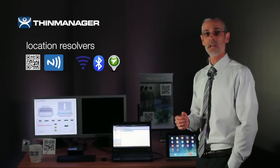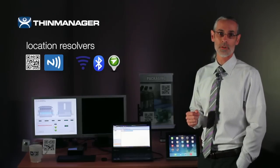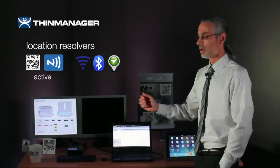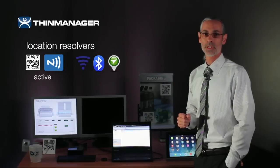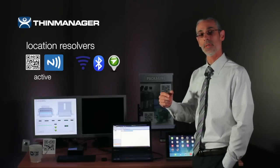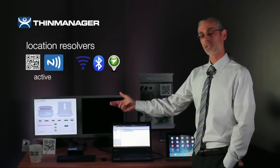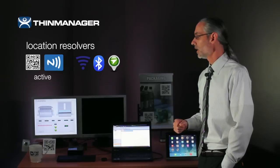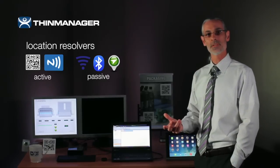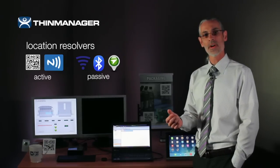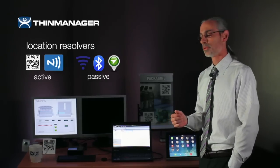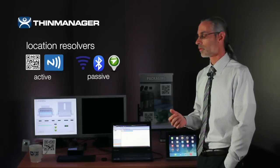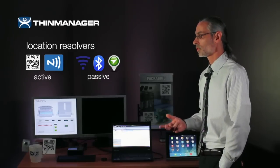Out of those five resolvers there are two different kinds. Active resolvers would be the QR code and NFC tags, which you have to be in near proximity to in order to interact with them. The other kind are passive resolvers — Wi-Fi, GPS, and Bluetooth — and you simply need to be within range of one of those signals for them to work.